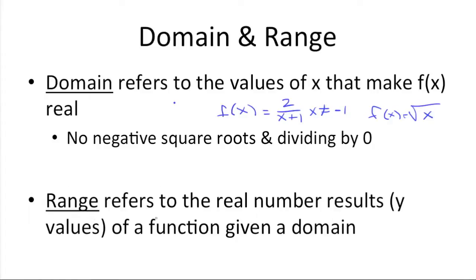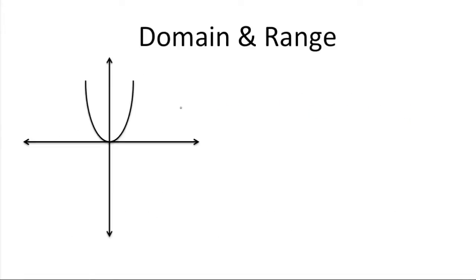So the range is just the y value to the domain's x. The range refers to the real number results or y values of a function given a domain. So sometimes you'll deal with domain and range when it comes to a graph. In this case, we have this shape here on a Cartesian plane. The domain would be all the x values included in this shape on this line. So it'd be all the x values from here to here. And the range would include all the y values from here all the way up to here. So all of these coordinate pairs, the x and y values on this line, will give us a domain and range.